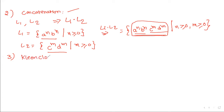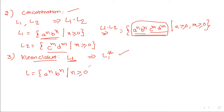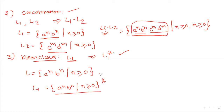The third property is Kleene closure. If L1 is a context-free language, then its Kleene closure L1* is also a context-free language. For example, if L = {A^N B^N | N ≥ 0}, then L* is also context-free. Whether the star equals 0, 1, 2, or any number of repetitions — in every case it contains equal number of A's and B's. So after Kleene closure, it is still a context-free language.